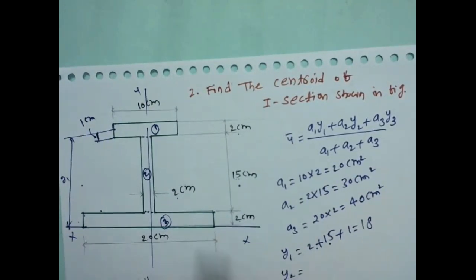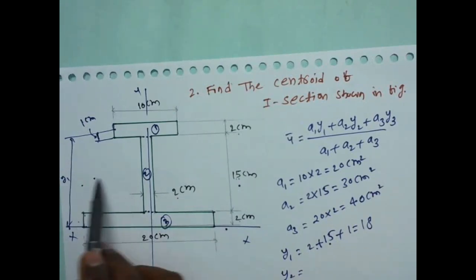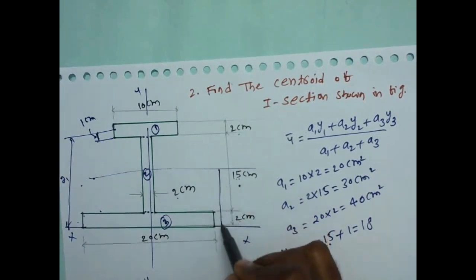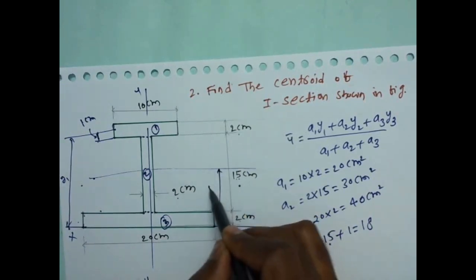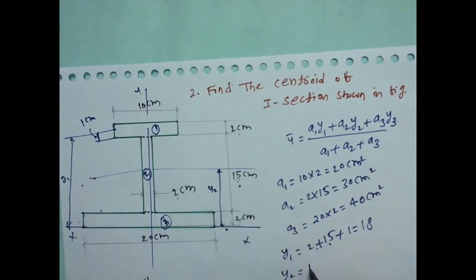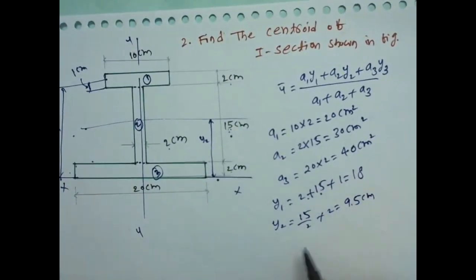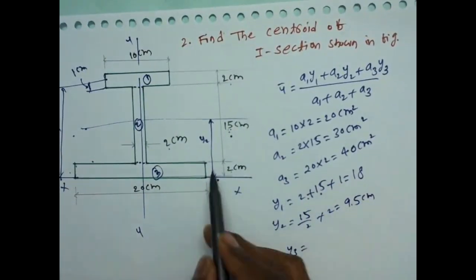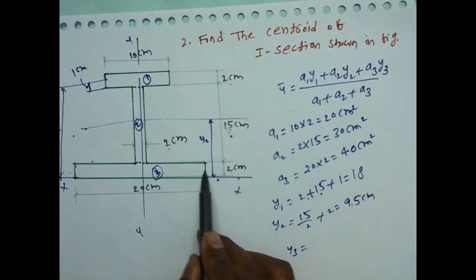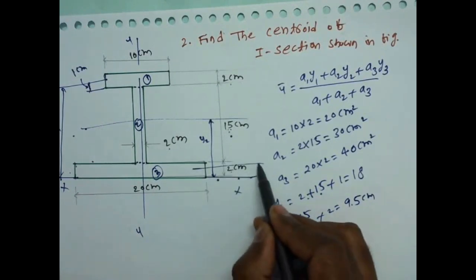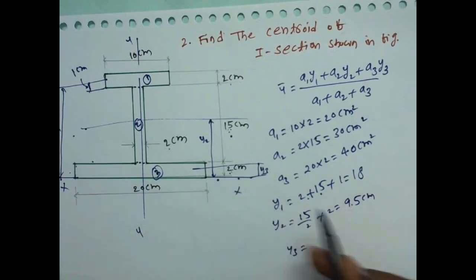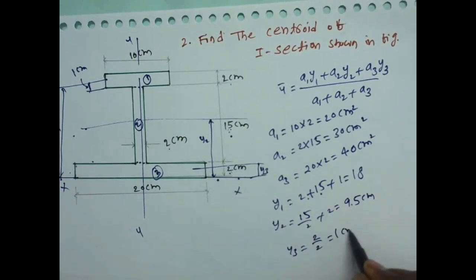Y2 is the distance from the reference X-axis to the centroid of the second rectangle. That is 15/2 + 2 = 7.5 + 2 = 9.5 cm. Y3 is the distance from the reference X-axis to the centroid of the third rectangle, which is half of 2 = 1 cm.